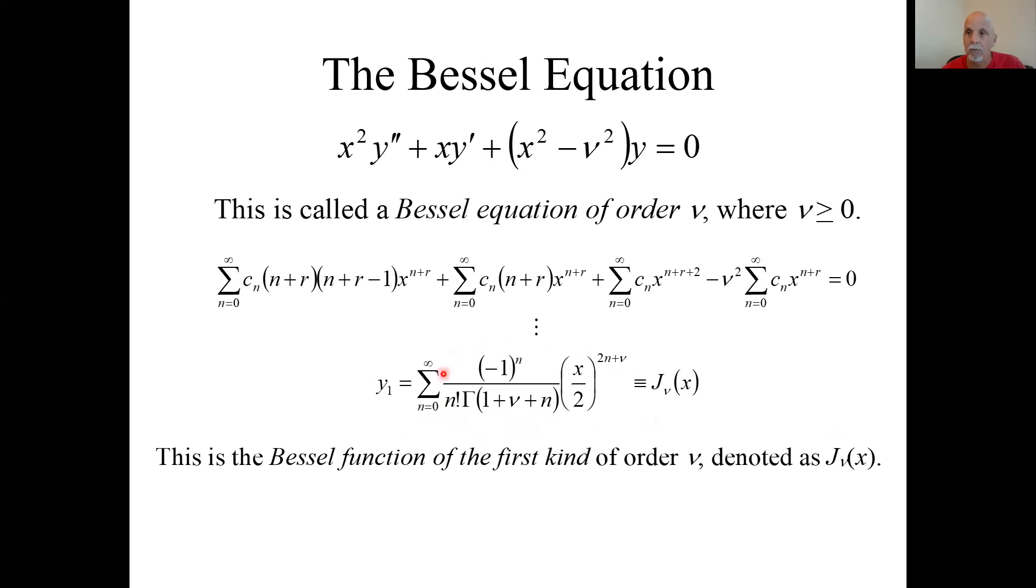This all looks scary, but we're just going to call that J sub nu, which is Bessel function of the first kind. So just think of this guy as like you would sine or cosine. We won't hardly be dealing with this infinite sum at all. Just think of it as this particular solution.